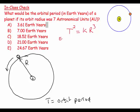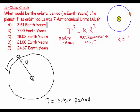One squared equals one cubed, so K equals one. If we're working in Earth years and astronomical units, K equals one. If we're working in seconds and meters, K is a different value that we'd have to calculate or be given. So in this case, T squared equals one times seven cubed.